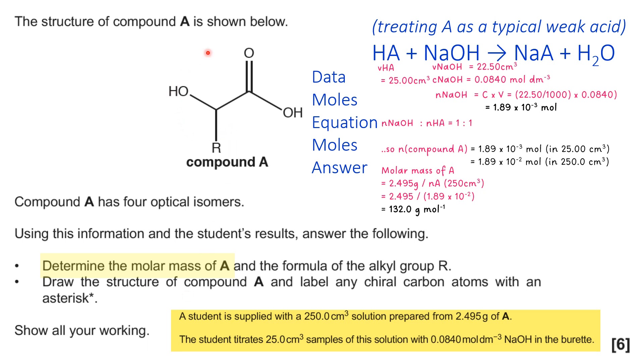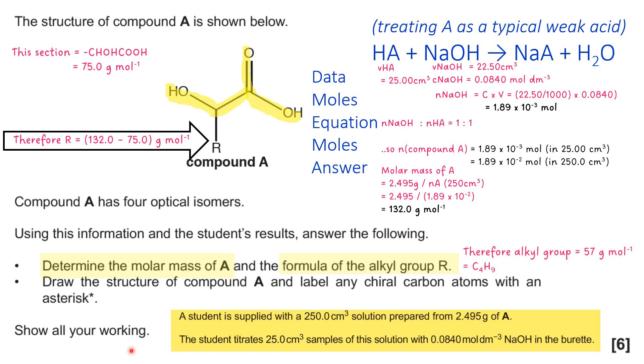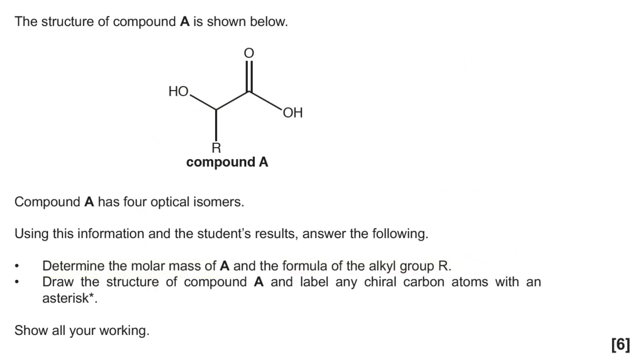So that's the molar mass of the whole thing. We now have to work out the formula of a section of it, basically what this bit is here. So what you do is you take the part you do know, and you add it all up, and that gives us 75 grams per mole. So clearly that R part is going to be our total minus 75, which gives us 57 grams per mole. Now I know it's an alkyl group, so the only alkyl group that sits into that kind of value is C4H9. And the next thing to do is to look at four optical isomers. What does that mean?